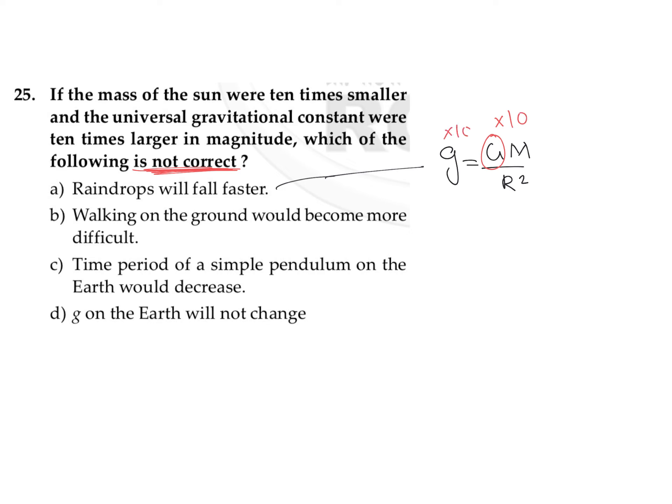Definitely this acceleration due to gravity is going to increase by 10 times. Here M is mass of earth which is constant, but because of change in G, the universal gravitational constant, this acceleration due to gravity is going to increase by 10 times. So definitely raindrops will fall faster. We can say that first option is correct.